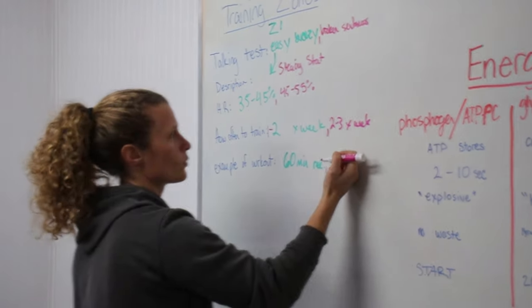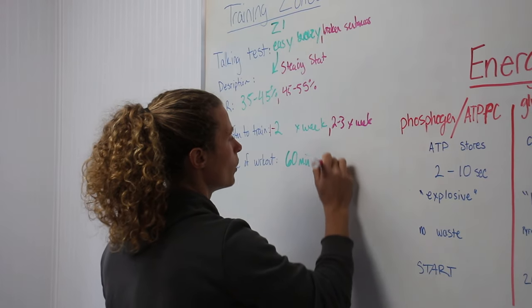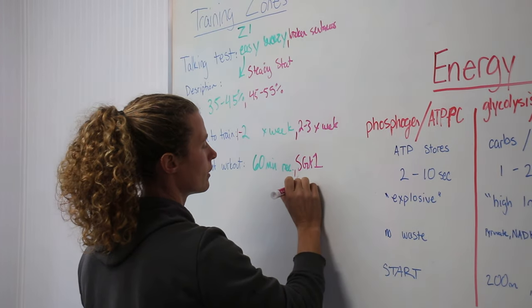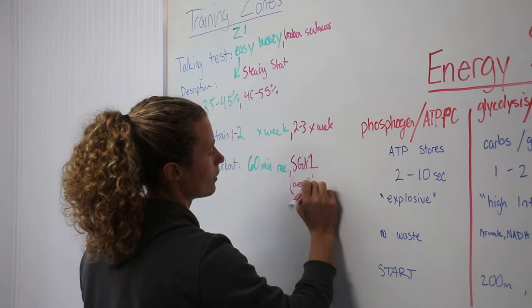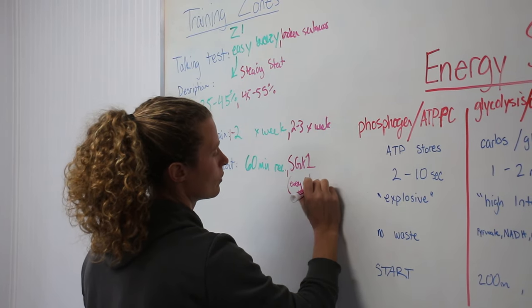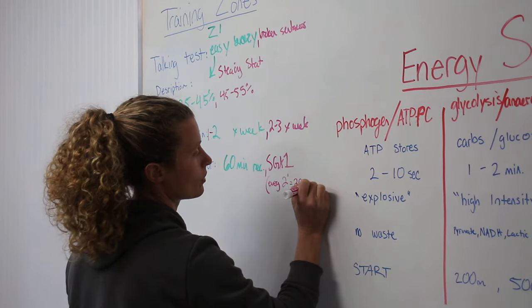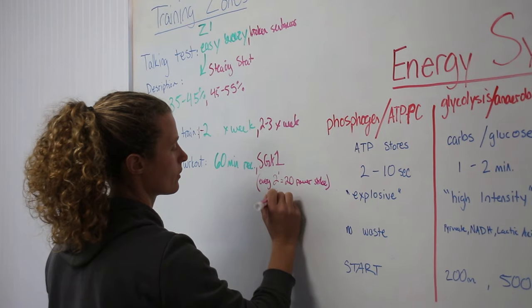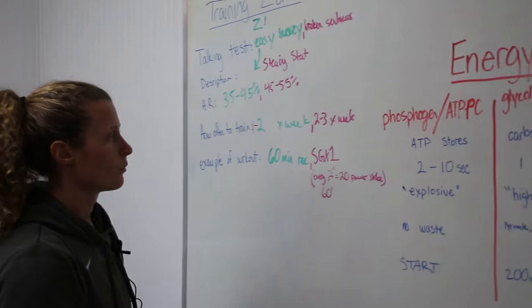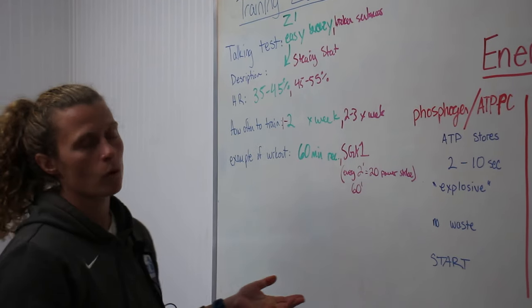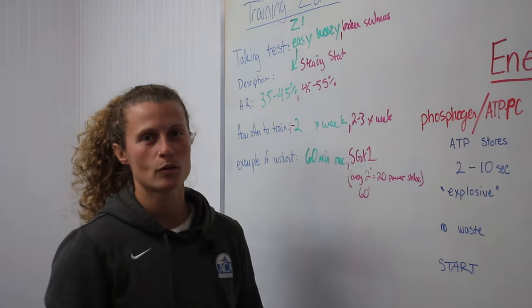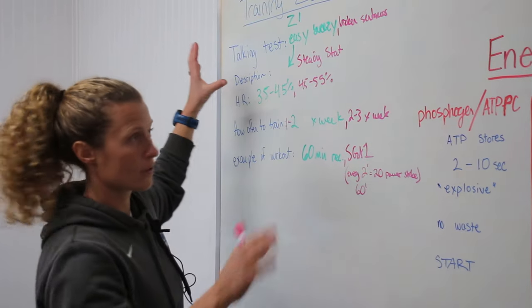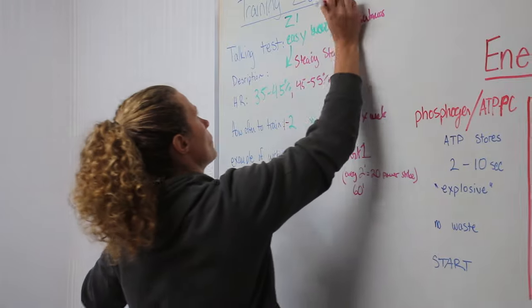An example of this would be what we call Sprinter's GA1. So every two minutes, you're going to do 20 power strokes. And this is for about 60 minutes of work. And so this is going to make it a little bit more working, but you could probably do this forever. Again, you're still in the aerobic oxidative section or system when we're talking about zone one and zone two.